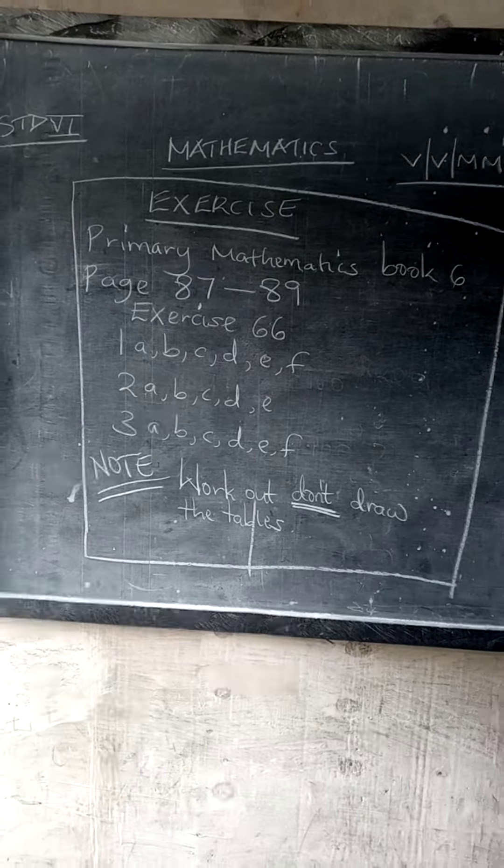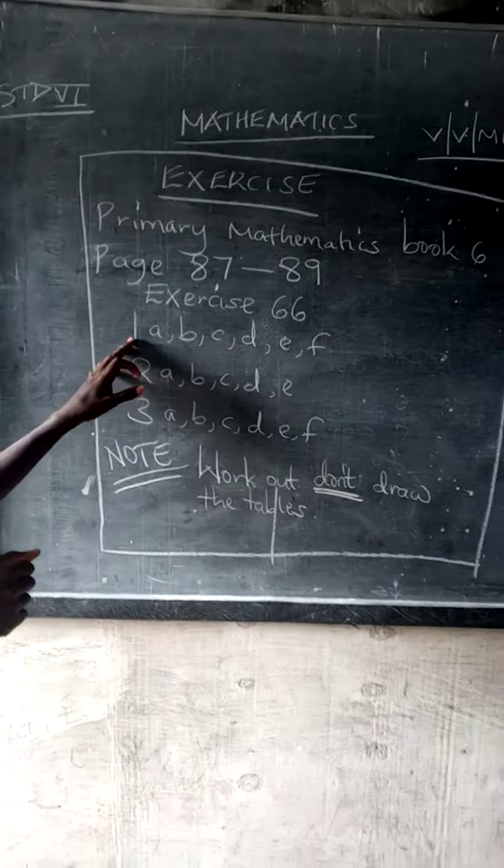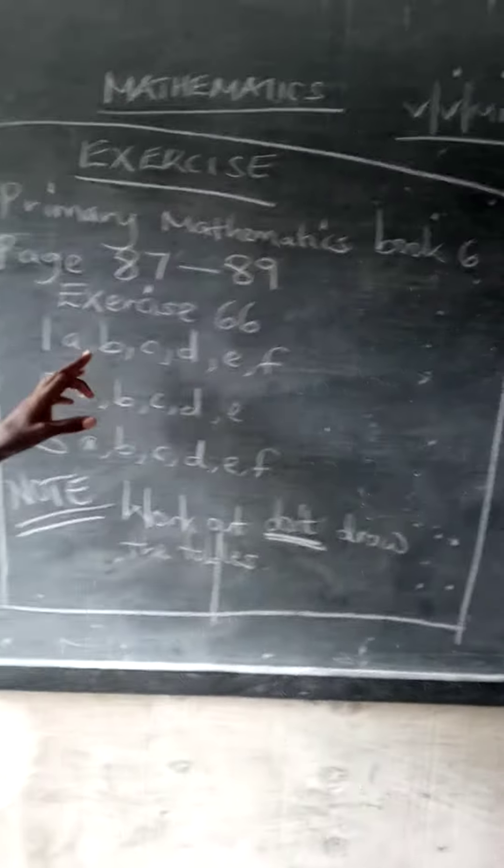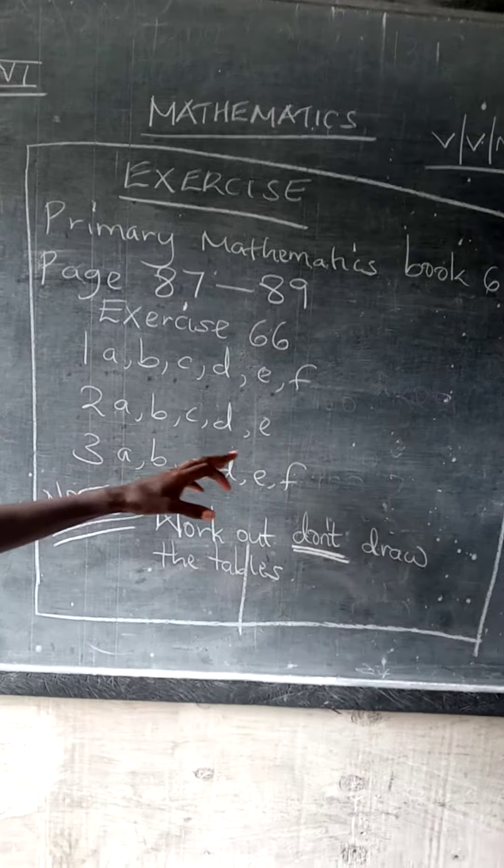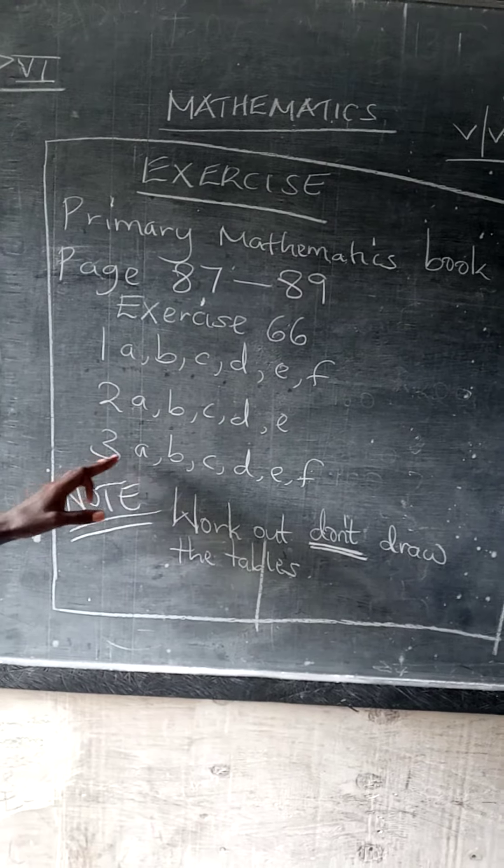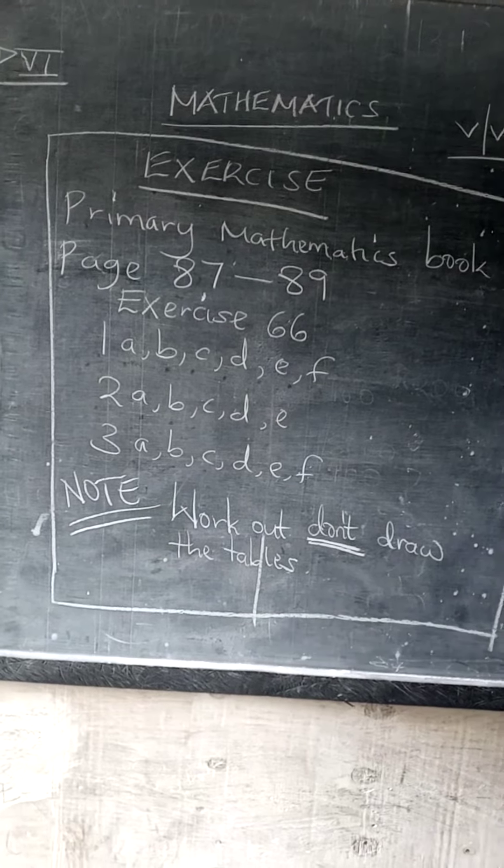Pages 87 to 89, Exercise 66. Number one, all of them: a, b, c, d, e, f. Number two: a, b, c, d, e. Then number three: a, b, c, d, e, f. Then remember we have a note here.